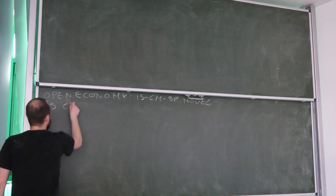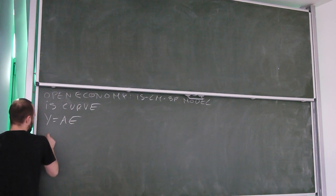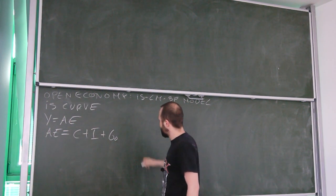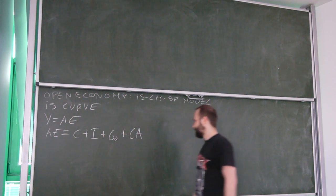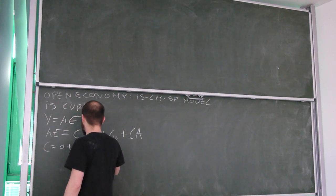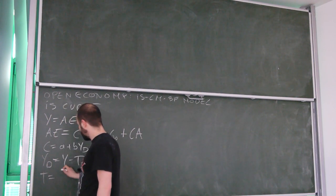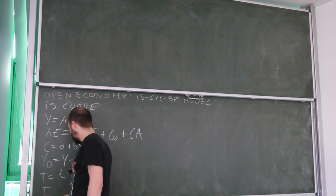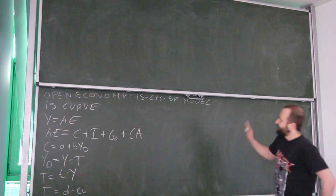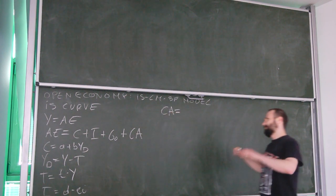The equilibrium condition stays the same, but now aggregate expenditures are given by consumption, investment spending — which we still assume is exogenous — plus the current account. Consumption stays the same: autonomous consumption plus b, MPC, times disposable income. Disposable income is still Y minus T. Investment is still here.